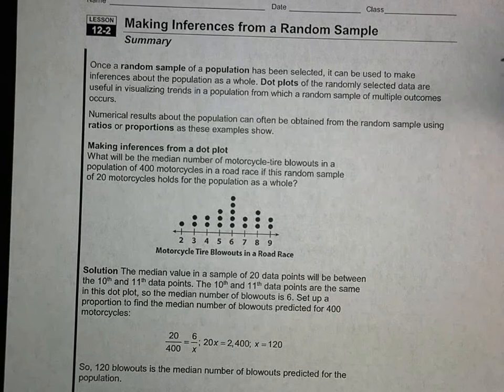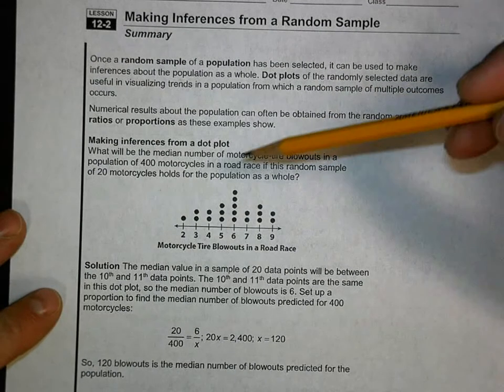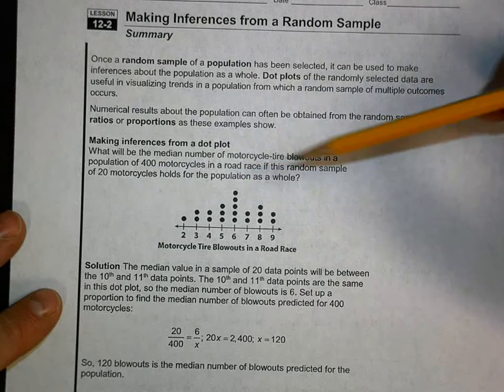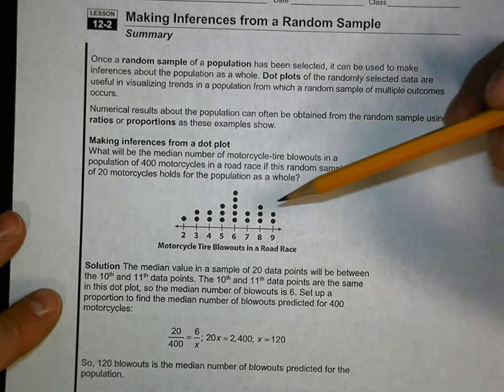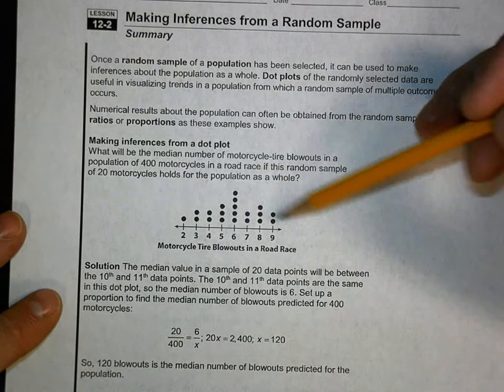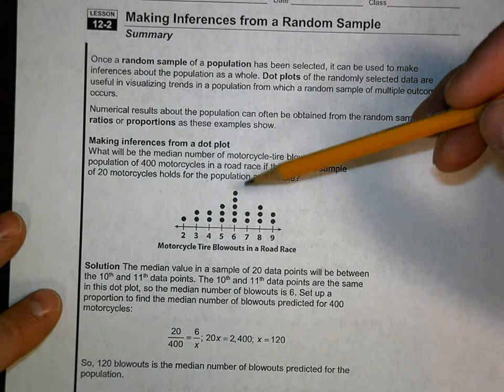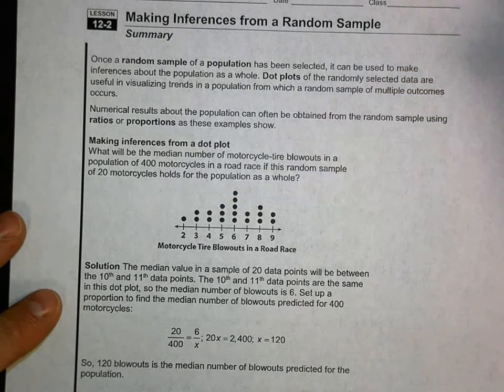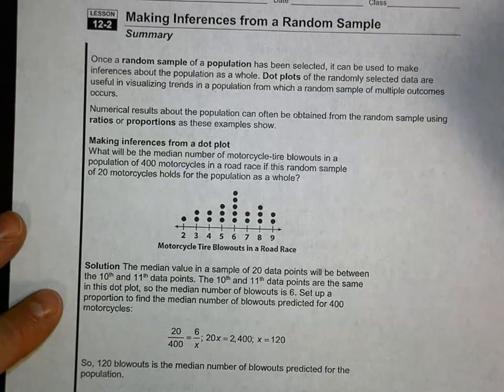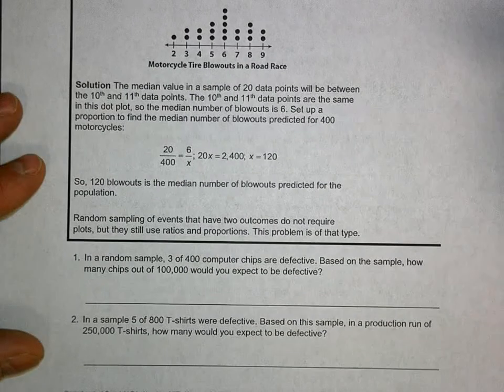Here they said we got this dot plot, tire blowouts in a road race, random sample of 20 motorcycles from a population of 400. You can see they've got their median, their mode, and it all pretty much lands out right here, which is fine.